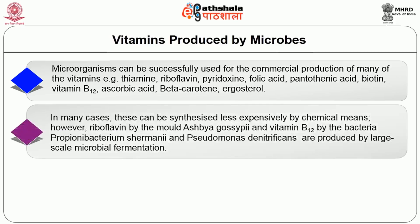In many cases these can be synthesized less expensively by chemical means. However, riboflavin — produced by the mold Ashbya gossypii — and vitamin B12 — produced by the bacteria Propionibacterium shermanii and Pseudomonas denitrificans — are produced by large-scale microbial fermentation. Microorganisms also play a partial role in the production of ascorbic acid, that is vitamin C.